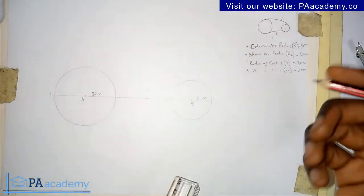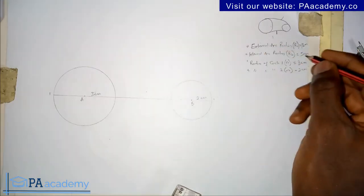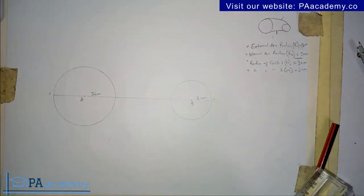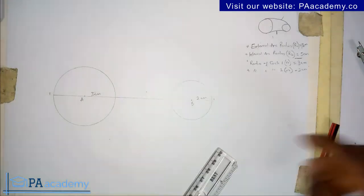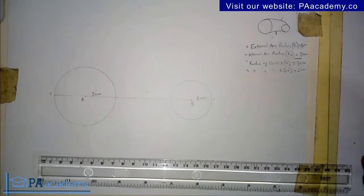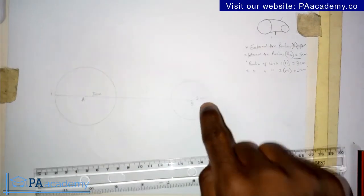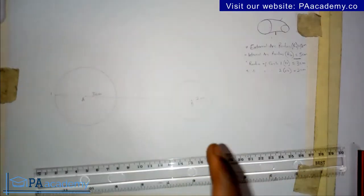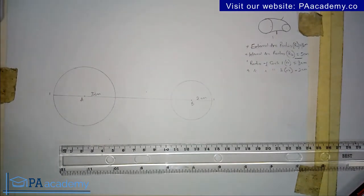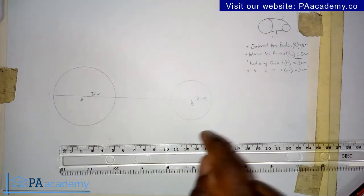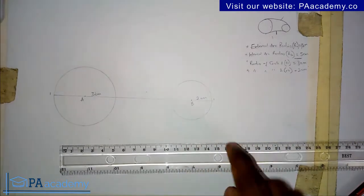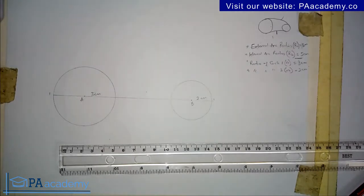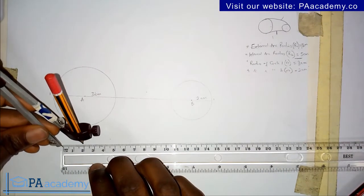For the internal arc, the internal arc radius is 5 cm. What we do is add it to the radius of the second circle — that is 2 cm — which gives us 7 cm. Then we also add the internal arc radius of 5 cm to the radius of the first circle, 3 cm, which gives us 8 cm.